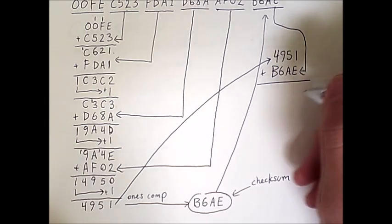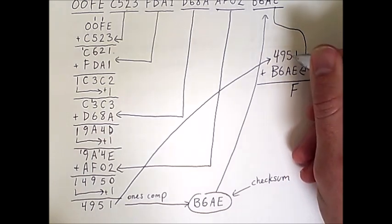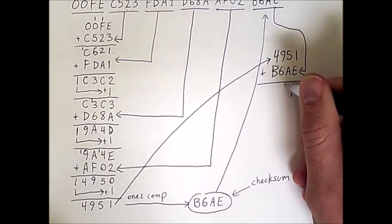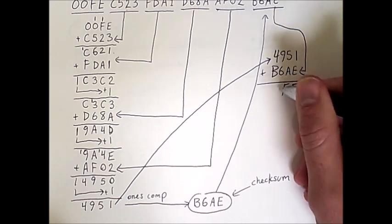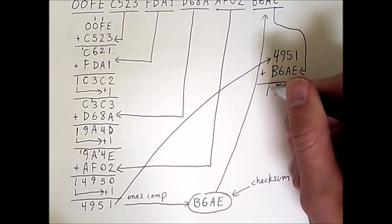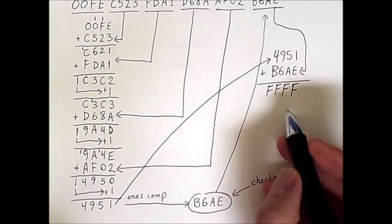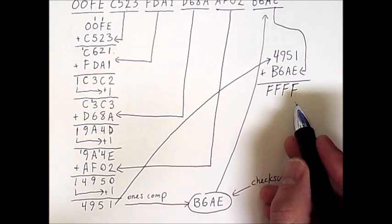Now E plus 1 is F. And A plus 5, that's 10 plus 5, that's 15, that's also F. And 9 plus 6, also 15, also F. And B plus 4, 11 plus 4, also F. So the result is all Fs, or in binary, all 1s.